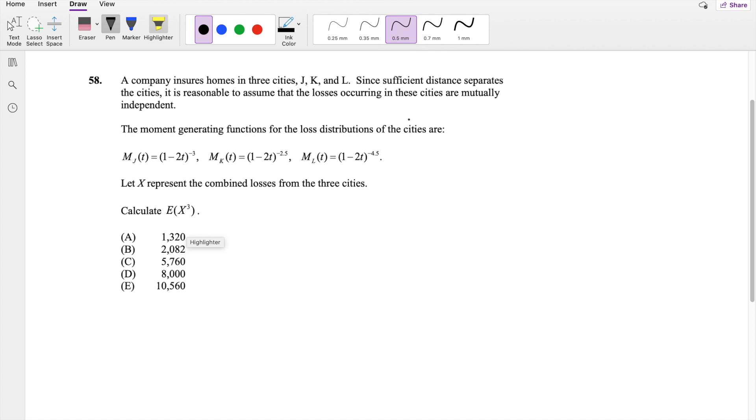So they say that these three things, cities J, K, and L, are mutually independent. So we can actually multiply all of these out to figure out the combined loss. So X is equal to M_J(t) times M_K(t) times M_L(t) because they're independent. So that's equal to (1-2t)^(-3) times (1-2t)^(-2.5) times (1-2t)^(-4.5). What we know about exponents is that if they have the same base, we can actually add them together. So this is going to be equal to (1-2t)^(-10).